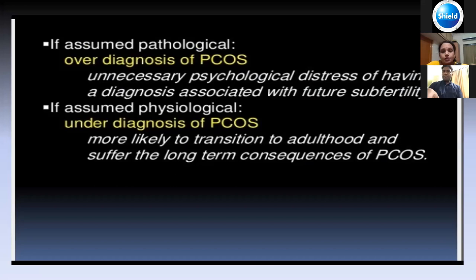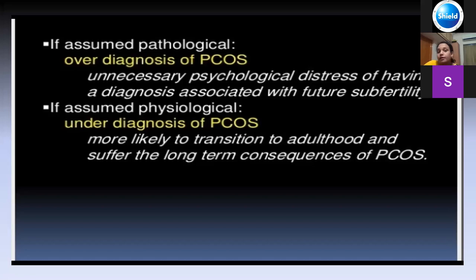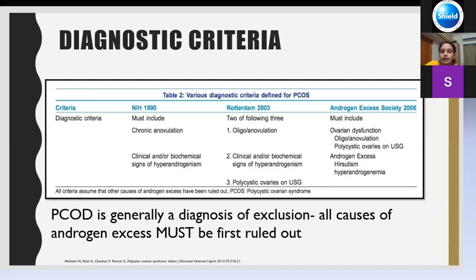The biggest problem is under- or over-diagnosis. Over-diagnosis instills psychological distress in the parent and child. Under-diagnosis means missing unopposed estrogen action, putting the child at later risk of diabetes or endometrial carcinoma. Common diagnostic criteria used for PCOS include NIH 1990, Rotterdam criteria, or the Androgen Excess Society criteria. Adolescent PCOS is a diagnosis of exclusion — please exclude all hyperandrogen conditions first.